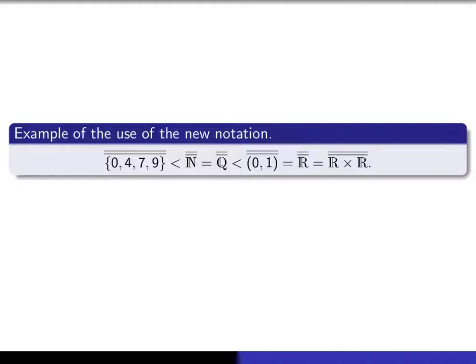Remember, we proved several lectures ago that Q is also denumerable, and therefore we have equality of these two cardinalities. In a recent lecture, we showed using Cantor's diagonalization argument that there's no way you can get a surjection from N onto the open interval from 0 to 1, and therefore this cardinality is strictly smaller than that cardinality. And we also proved in a recent lecture that all of these have the same cardinalities.